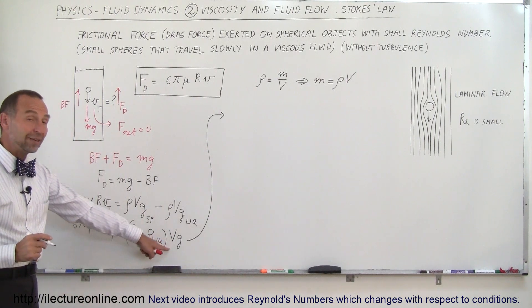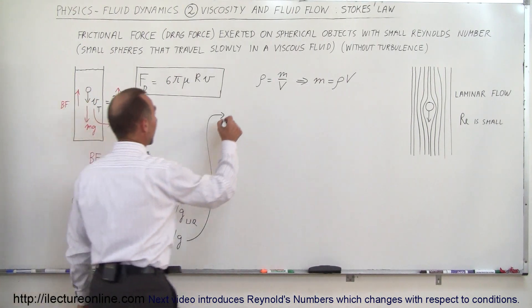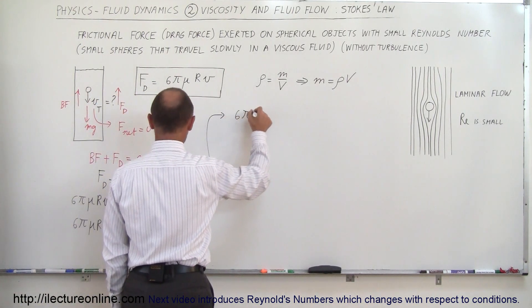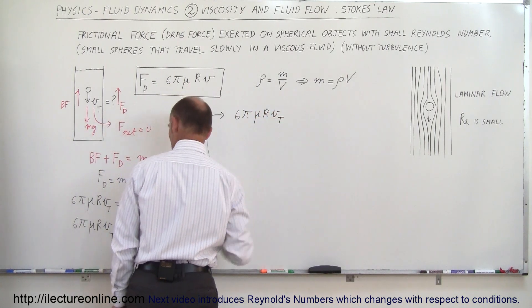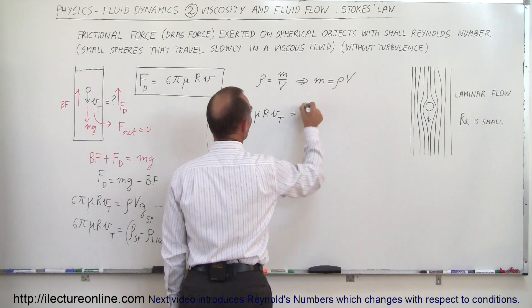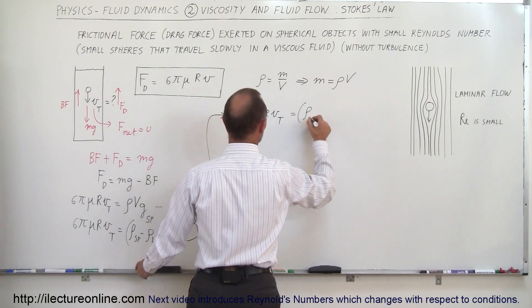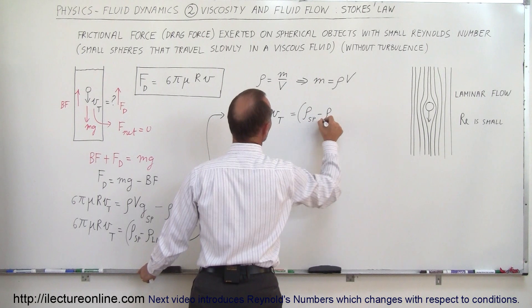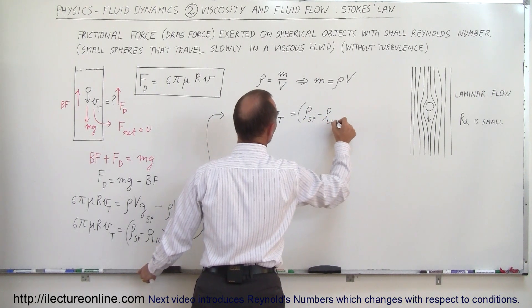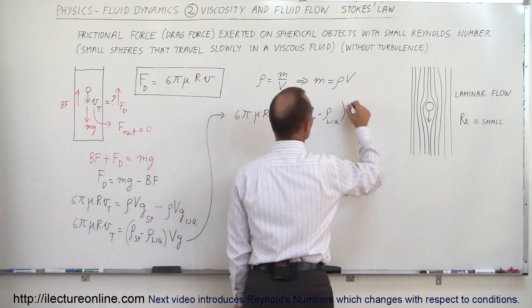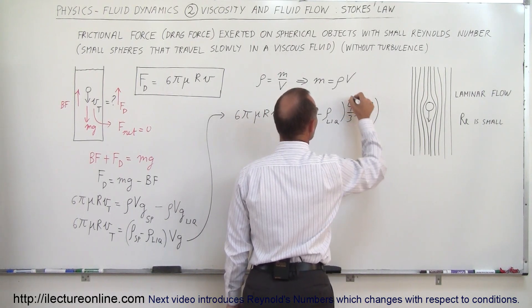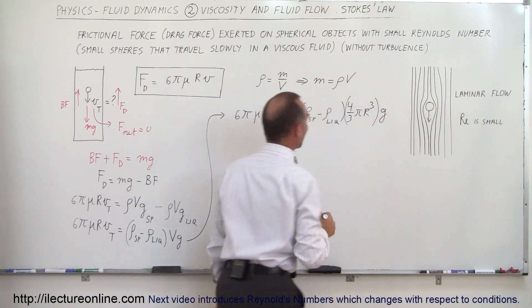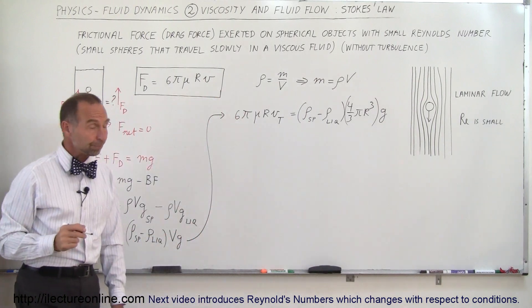And of course, since I'm out of room, let me come up here and then we can write this again and we'll replace V with what V is equal to. So we can write that 6πηrv_terminal is equal to the difference in the density of the sphere minus the density of the liquid times the volume, which is 4/3 πr³, times acceleration due to gravity.